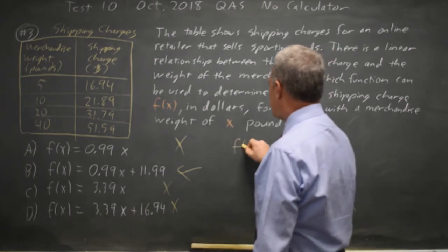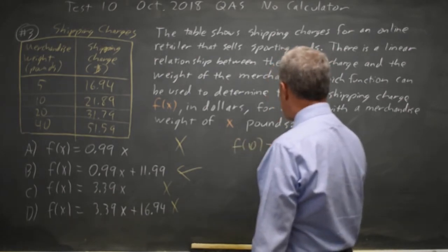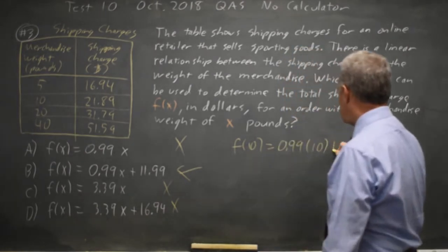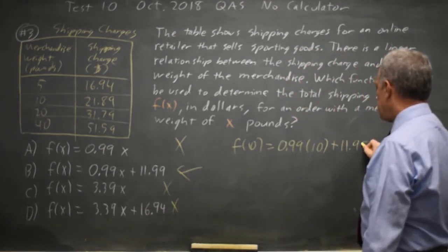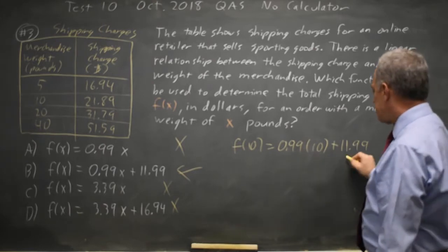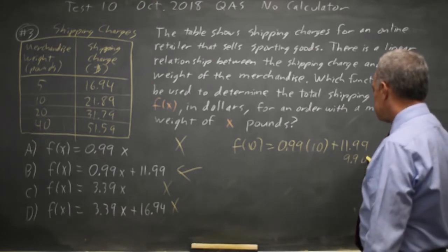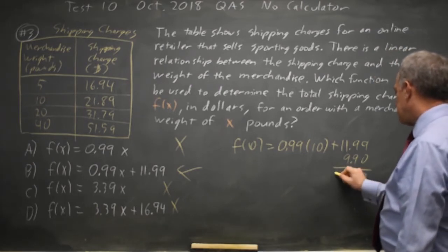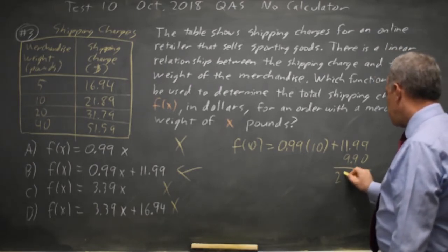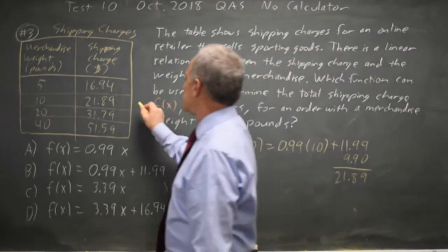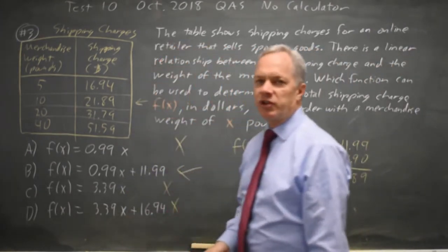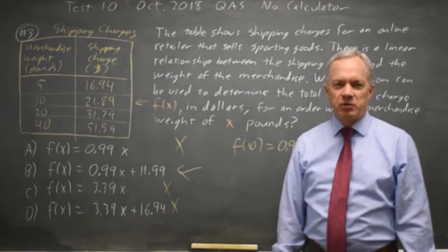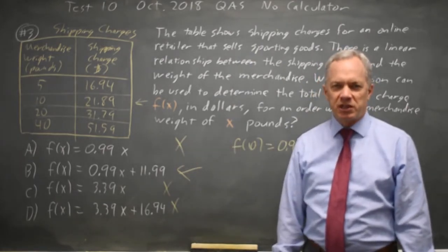So F of 10 equals 0.99 times 10 plus 11.99. 0.99 times 10 is $9.90. Adding we get $21.89, which is the correct answer. I could put in other values, but having ruled out the other three choices plus matching one point is sufficient to make me comfortable with that.